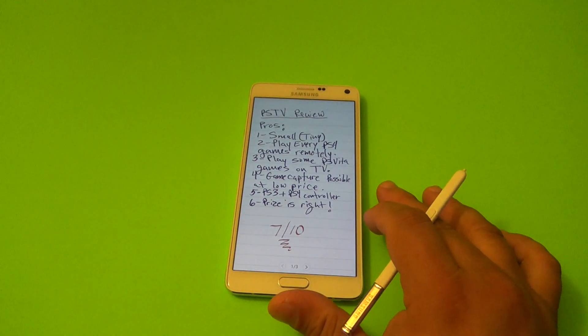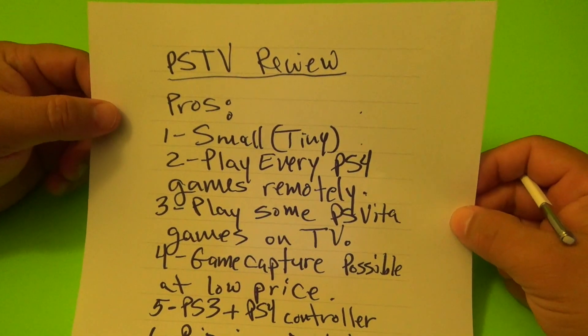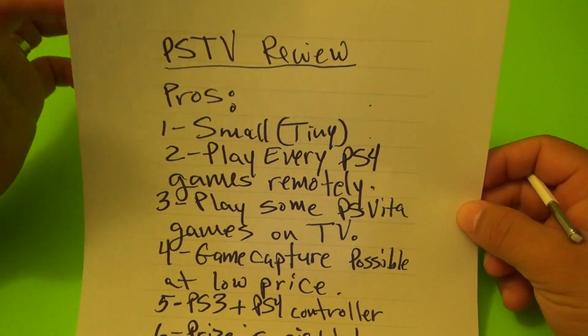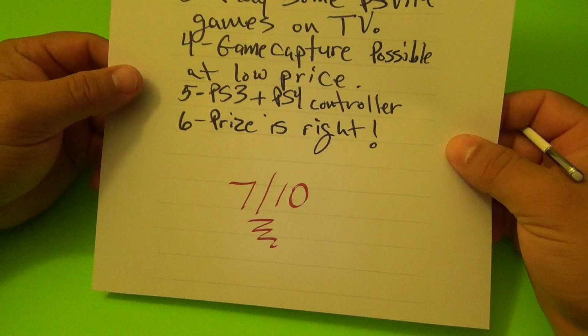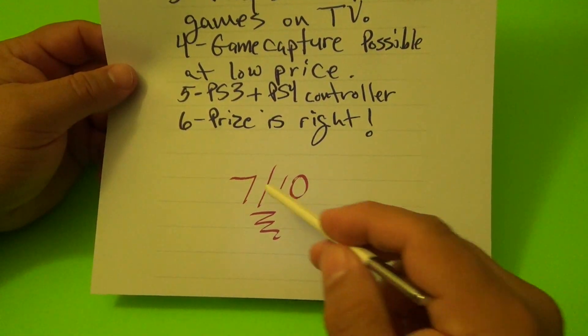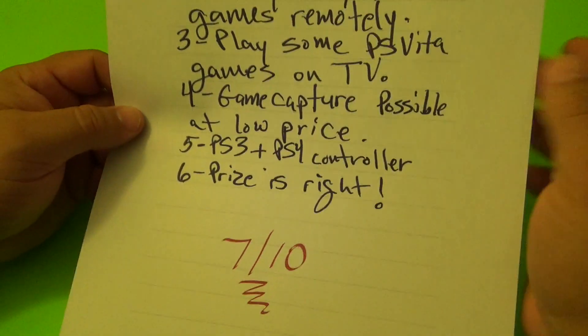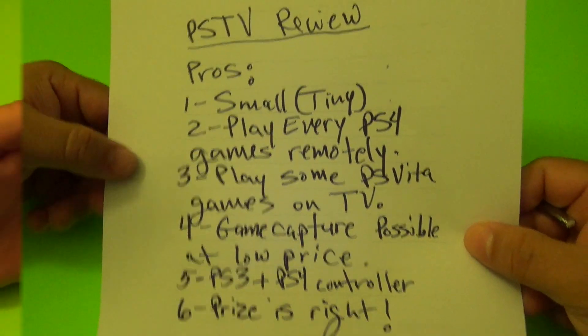Here are the notes — look at this: 'PlayStation video review pros.' Since I chose color, this came out in red and everything else came out in dark blue.